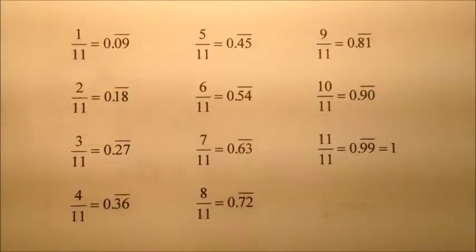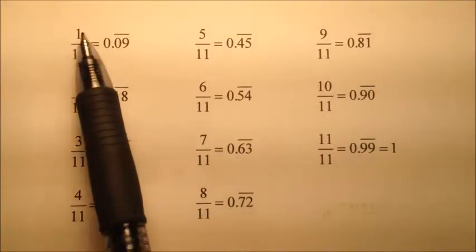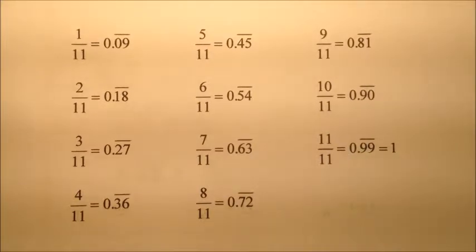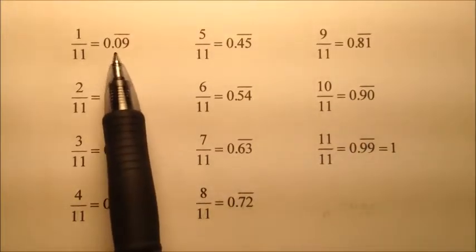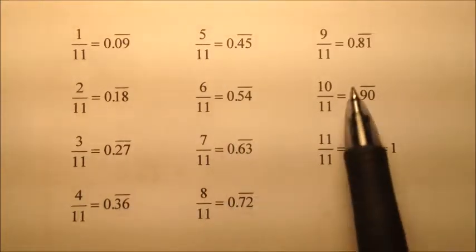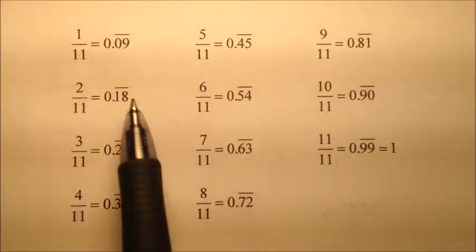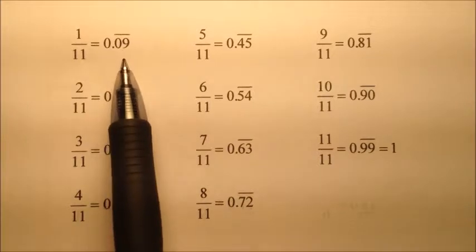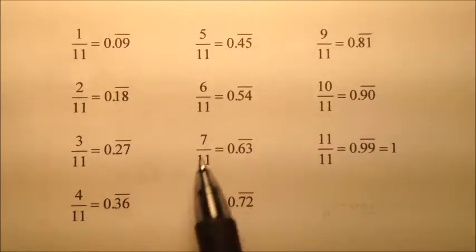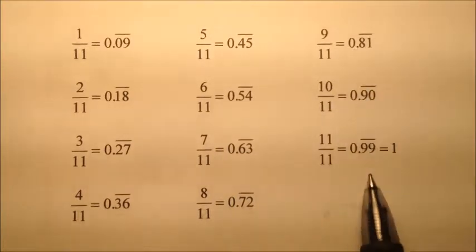Secondly, I'd like to look at the fractions whose denominators are 11. So we have all of them here: 1/11, 2/11, 3/11, all the way through 10/11 and 11/11. And it looks like this time we have two digits that repeat. And look at the characteristics that these two digits have: 09, 18, 27, 36. It looks like they're all going to be multiples of 9.